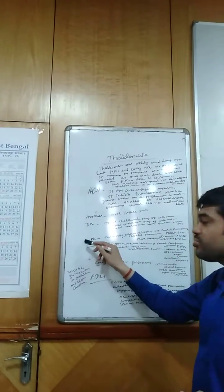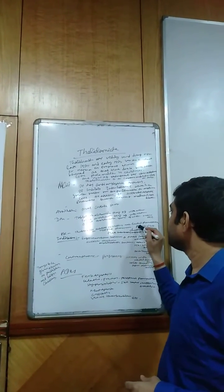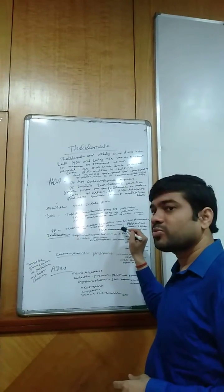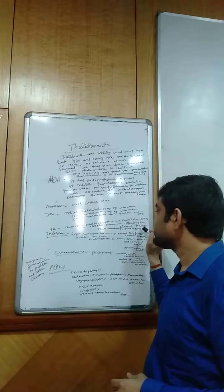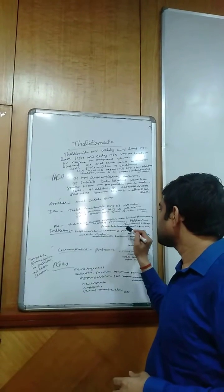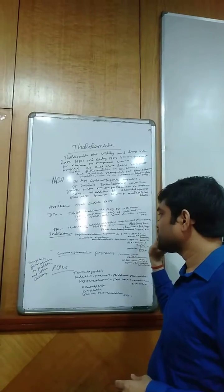Coming to the pharmacokinetic parameters, Thalidomide exhibits absorption rate-limited pharmacokinetics or flip-flop phenomena. The half-life of Thalidomide is 6 hours, clearance is 10L per hour, and peak plasma concentration is reached at 2 to 6 hours.